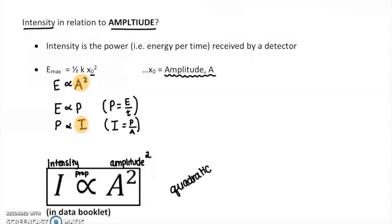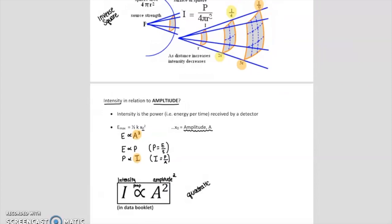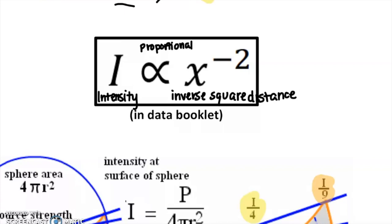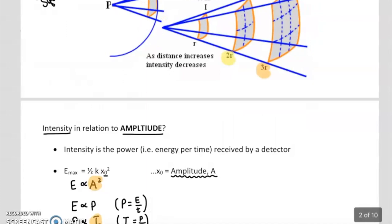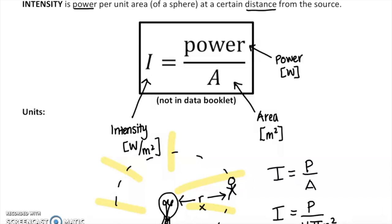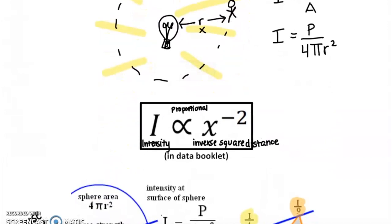This is a nice quadratic relationship. So we have two important equations listed in your data booklet for intensity: first, that intensity is proportional to the inverse square of distance; and second, that intensity is proportional to the amplitude squared. What is not listed in your data booklet is intensity equals power per area — you do need to know this, and it can help you understand the first listed equation.